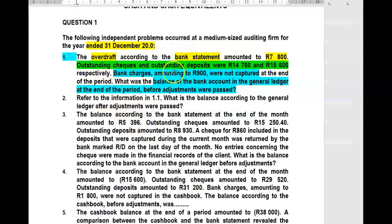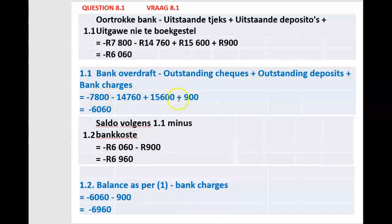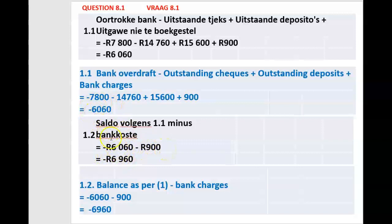In question two, all the same circumstances apply — what is the balance according to the general ledger after the adjustments were passed, i.e., after the 900 Rand bank charges went through? We take our pre-adjustment balance of 6,060, deduct the 900 Rand bank charges. This reduces our bank ledger balance, increasing the overdraft to 6,960 Rand.